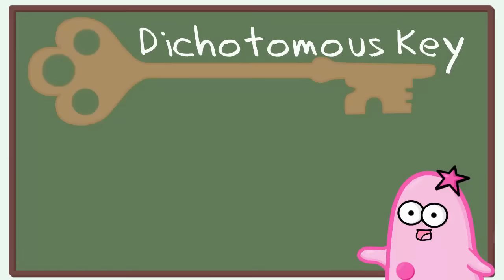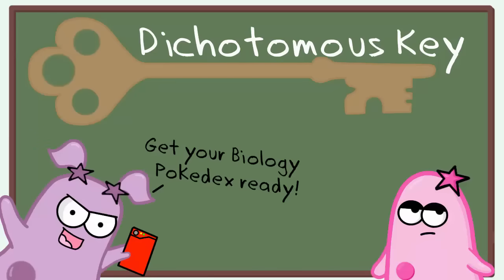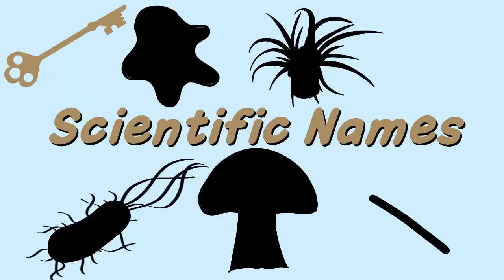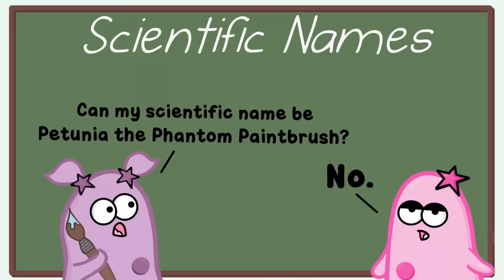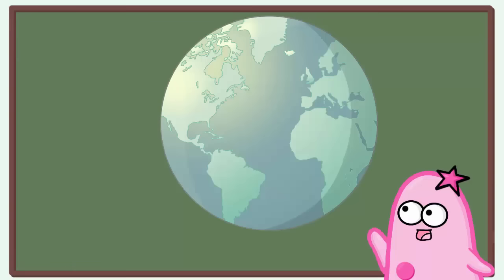So what's a dichotomous key? It allows you to identify organisms based on a series of statements that are typically organized in pairs. We are going to use the dichotomous key to determine scientific names for five mystery organisms. Scientific names often have Latin or Greek roots and they can be used across different languages by scientists all over the world.